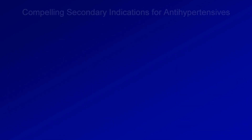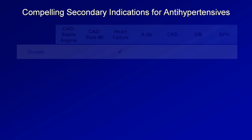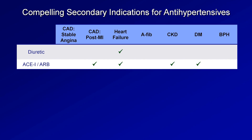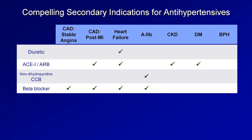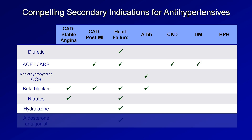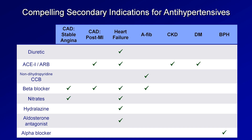With choosing antihypertensives, there are sometimes compelling secondary indications for one drug which might overrule typical recommendations. Diuretics, particularly loop diuretics, are also helpful in heart failure. ACE inhibitors and ARBs are helpful in patients post-MI, those with heart failure, chronic kidney disease, and diabetes. Non-dihydropyridines can help rate-control patients with atrial fibrillation. Beta blockers are also indicated in stable angina, post-MI, heart failure, and can control AFib. Nitrates are indicated in angina and heart failure. Both hydralazine and aldosterone antagonists are frequently used in heart failure. Finally, the primary indication for alpha blockers is actually treatment of urinary difficulties associated with benign prostatic hypertrophy, with blood pressure lowering often just a secondary benefit.